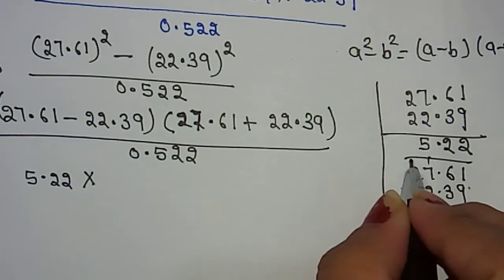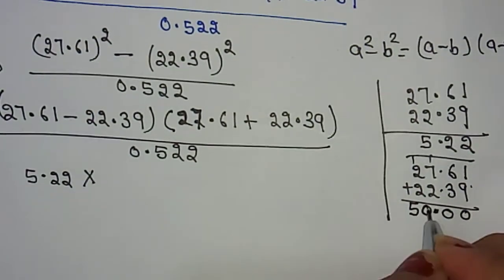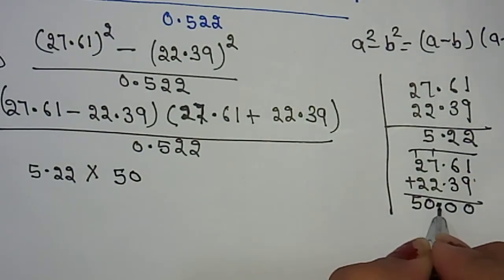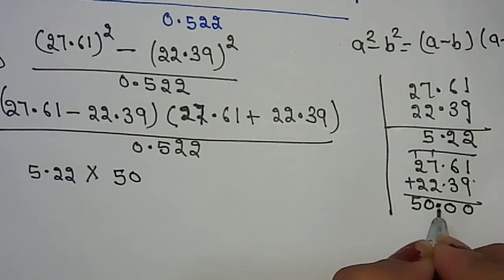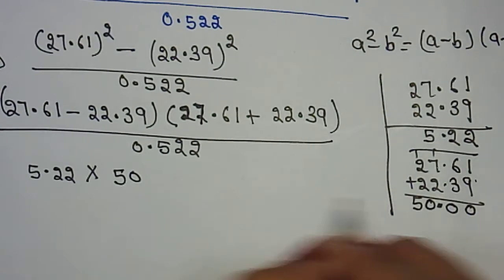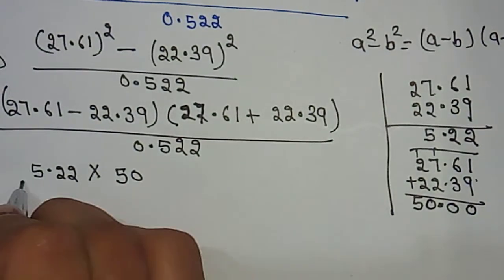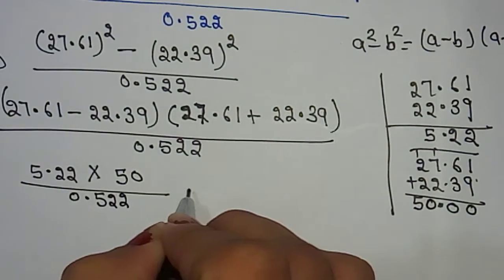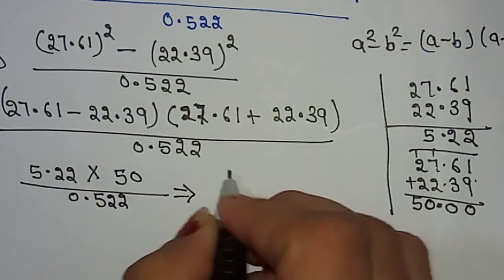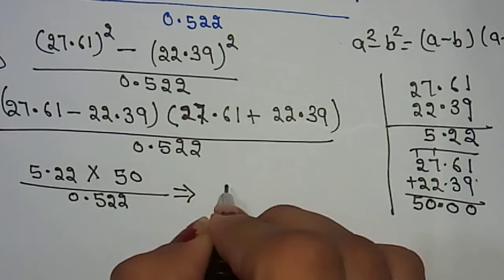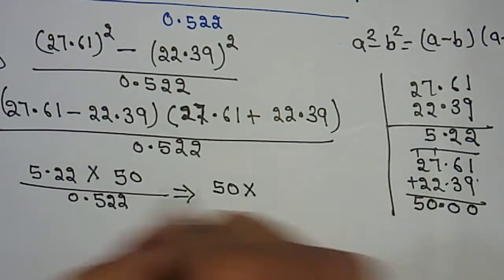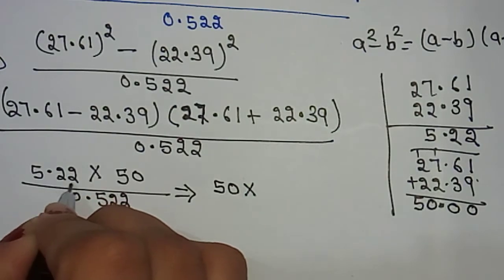So your answer is 50. You don't need to put zeros after the decimal. Now we have 5.22 × 50 divided by 0.522. The next step will be 50 multiplied by 5.22 when we remove the decimal from these two numbers.